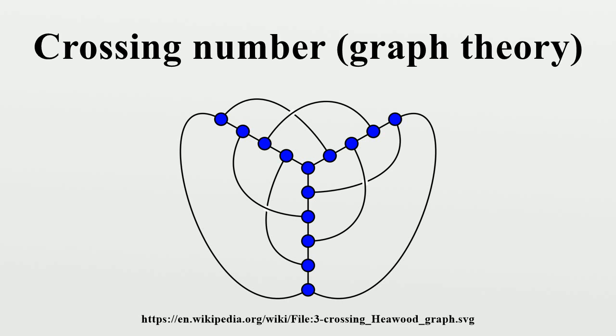The smallest 4-crossing cubic graph is the Möbius-Kantor graph with 16 vertices. The smallest 5-crossing cubic graph is the Pappus graph with 18 vertices. The smallest 6-crossing cubic graph is the Desargues graph with 20 vertices. None of the four 7-crossing cubic graphs with 22 vertices are well known.